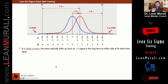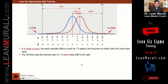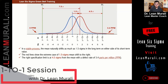In a stable process, the mean or average can shift as much as 1.5 sigma in the long term, because we cannot say the vehicle is always running perfectly — when continuously used, it will start wobbling a bit. We take care of that wobbling in our process. It can be on either side, and the red line shows the extreme phase of 1.5 sigma.